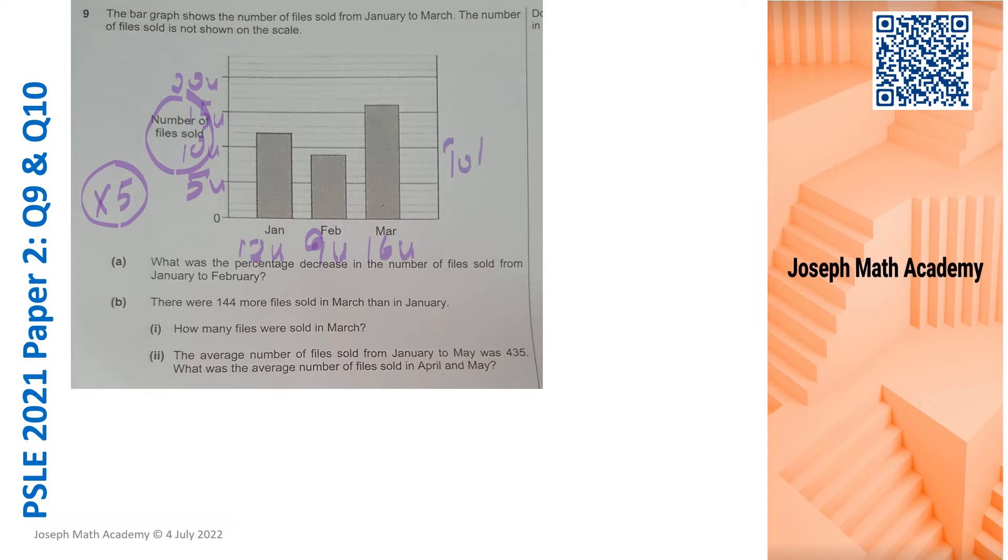In January, 12 units of files sold, 9 units of files sold in February and 16 units of files sold in March. When we add all this together, we will know the total is 37 units. Let's stand by this total.